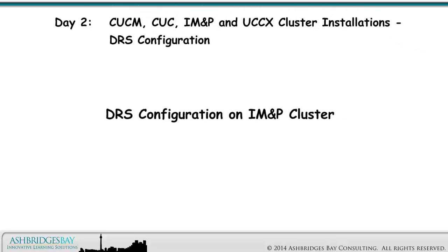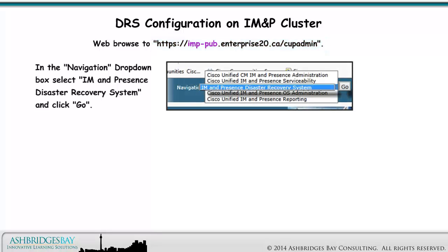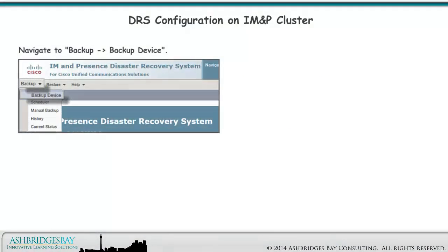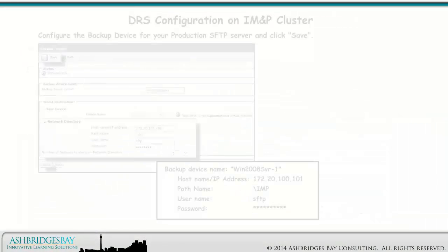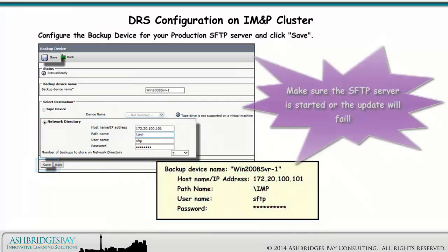Now we configure DRS for the IM&P cluster. Web browse to this address. In the Navigation drop-down box, select IM&P Disaster Recovery System and click Go. Log in using platform and your password. Navigate to Backup > Backup Device. The newly installed IM&P cluster has nothing configured. Click Add New. Configure the backup device for your production SFTP server and click Save. Make sure the SFTP server is started or the update will fail.